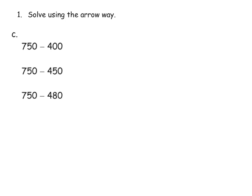The directions say solve using the arrow method. We're going to do that quickly because by this point in our lessons, I think our students are starting to get the hang of the arrow method. So 750 — we're going to start here — minus 400. We could do this in one fell swoop. Students are going to say we have 700s, we're going to take away 400s, which means we're going to be left with 300s. And then we have the 50 because nothing happened with our 10s or our 1s.